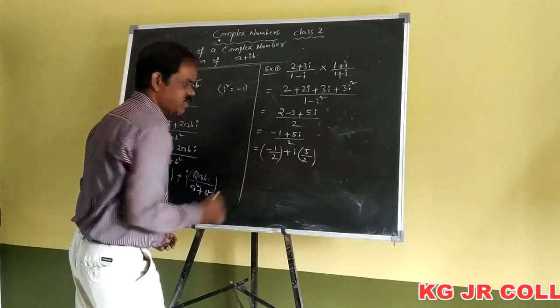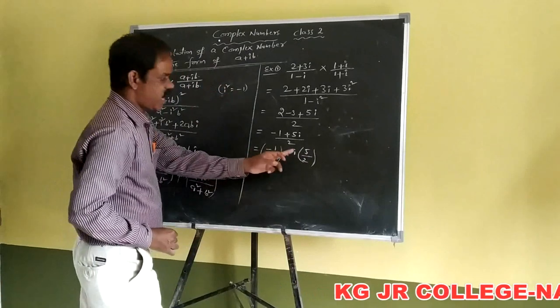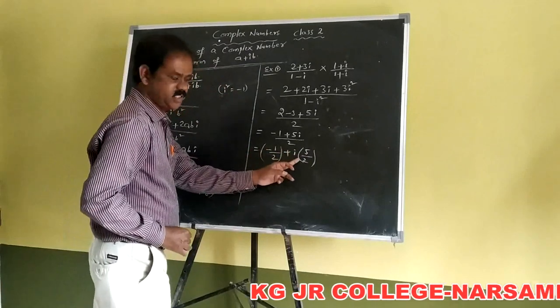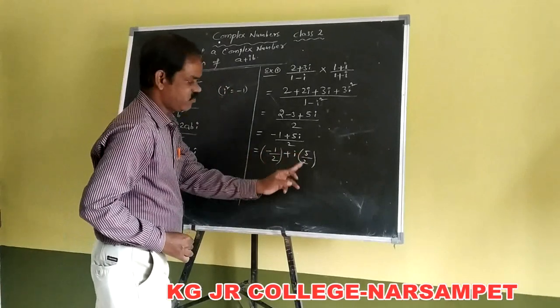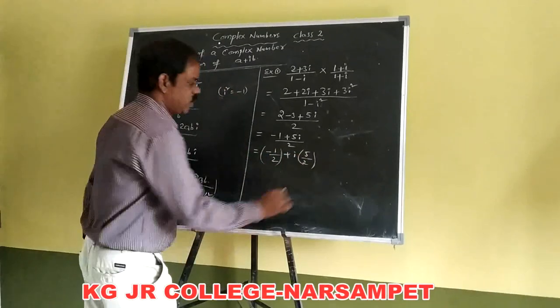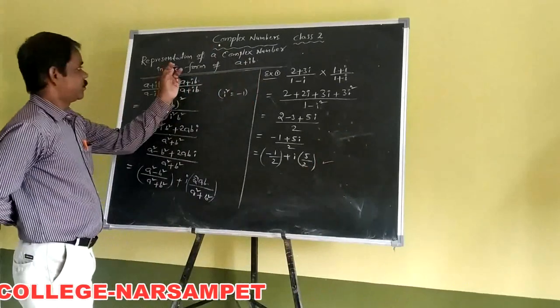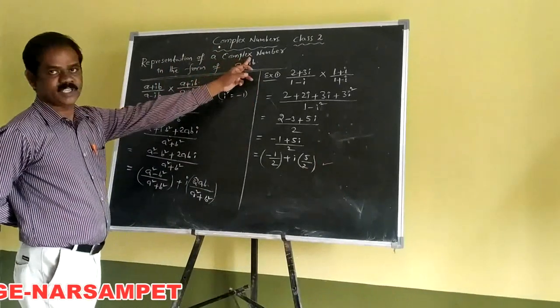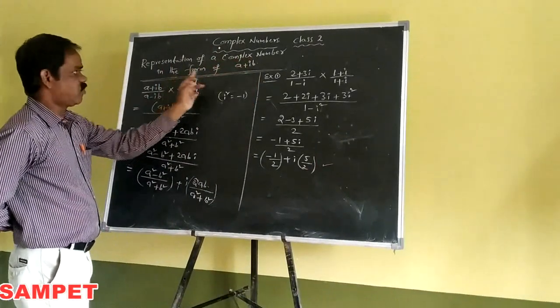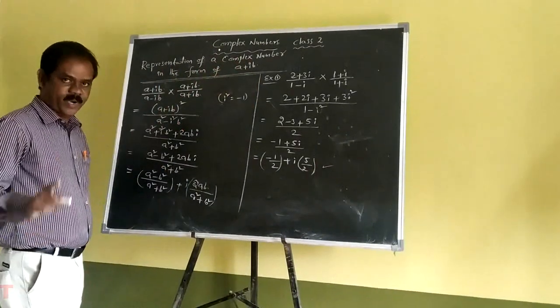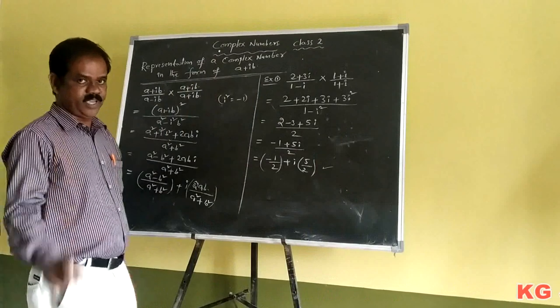The real part is equal to minus 1 by 2, and the imaginary part is equal to i times 5 by 2. This is the concept of representation of a complex number in the form of A plus iB.